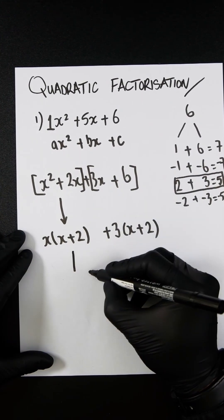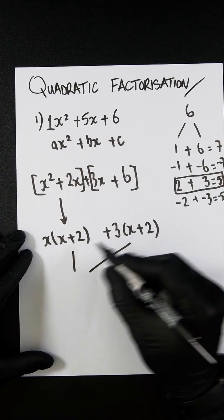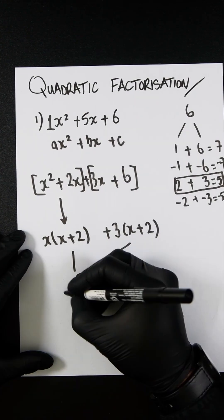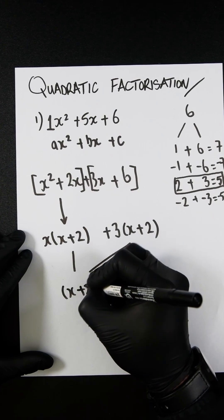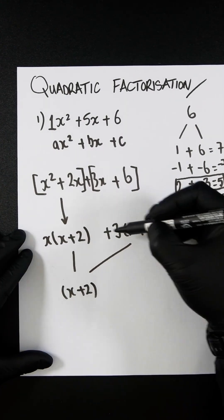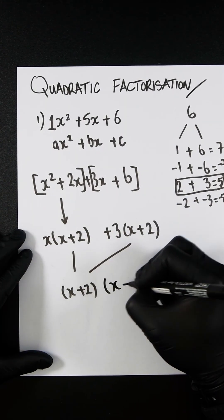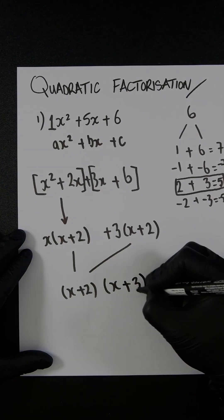You now take everything that is inside the brackets, which should be the same, and place it once here. You take everything that is outside the brackets and place it once here.